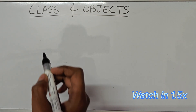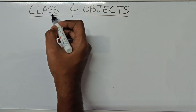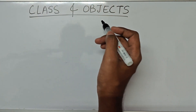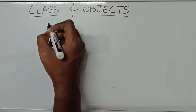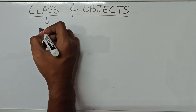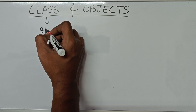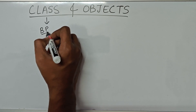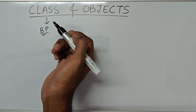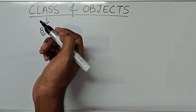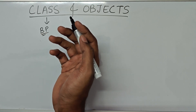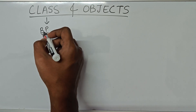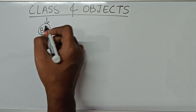Hello, in this video I'll teach you about class and objects in Java. So what is a class? A class is like a blueprint. Using a blueprint, you can create n number of copies, and all these copies will be same as the blueprint.